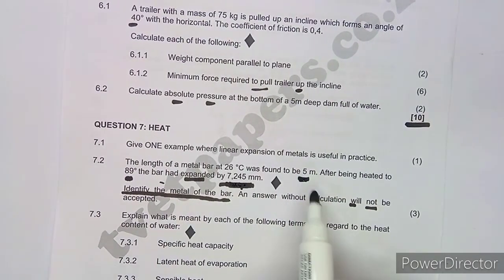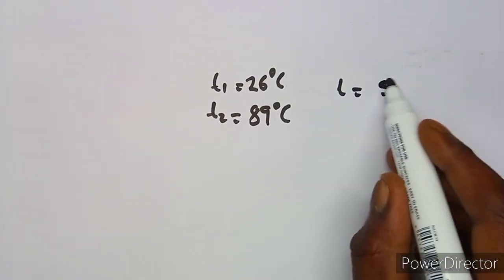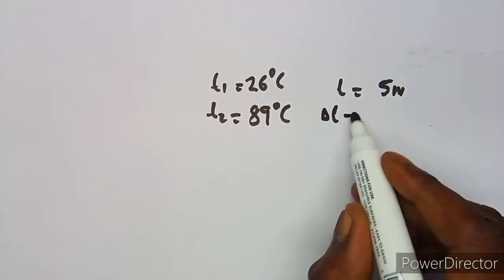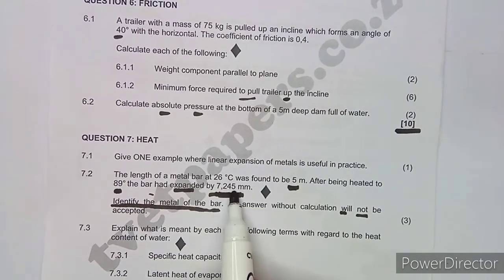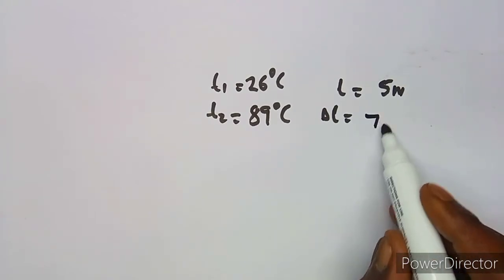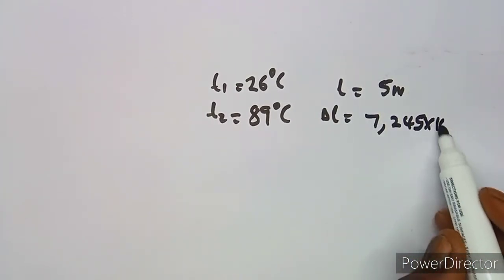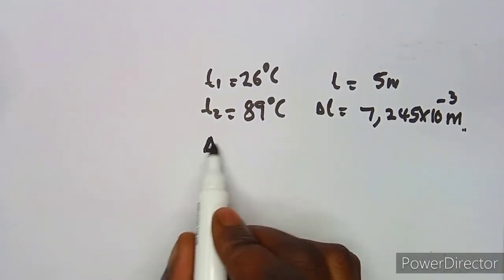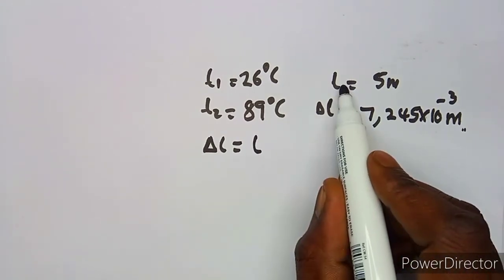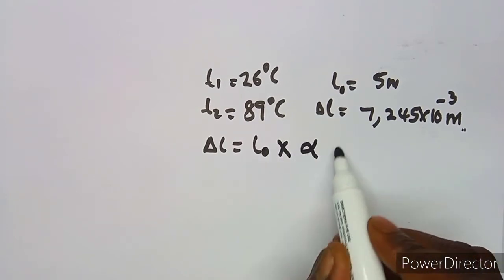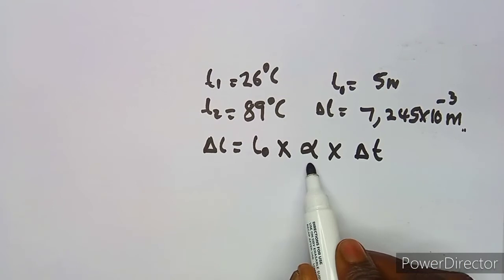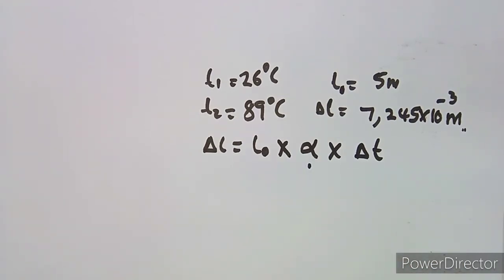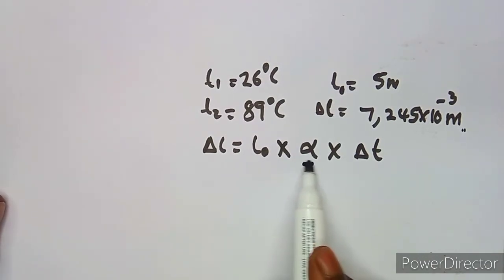The original length L₀ = 5 m. The expansion, or change in length ΔL, is 7.245 mm, which equals 7.245 × 10⁻³ m. We know that the change in length is given by the formula: ΔL = L₀ × α × ΔT, where α represents the linear coefficient of expansion, which is different for every metal.